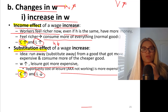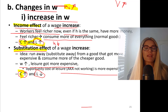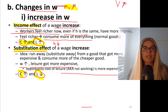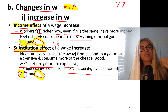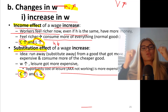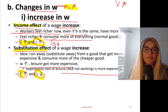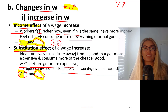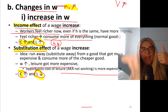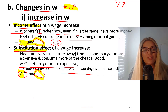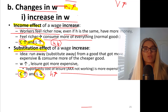So wages go up and you're going to consume more consumption goods. But what happens to leisure depends on whether income effect or substitution effect dominates. If income effect dominates, you consume more leisure, so hours of work go down. If substitution effect dominates, it pulls leisure down at a stronger pace, so your leisure goes down and hours of work go up. This is how income and substitution effects work when wage rate goes up.